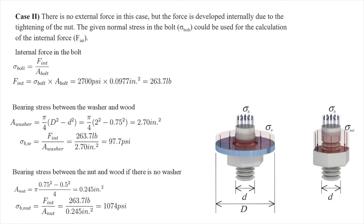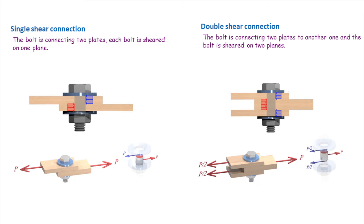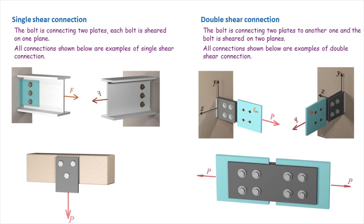As a takeaway, a connecting bolt can be sheared on more than one plane depending on how many plates are connected. If a bolt connects two plates, it is sheared on one plane — a single shear connection. If it connects two plates to another plate, it is sheared on two planes — a double shear connection. Triple shear or more can be defined similarly. Note that shear type depends only on the number of shearing planes per bolt, not the number of bolts. A double shear connection is more efficient because the force splits across two planes, increasing shearing area and reducing shear stress.